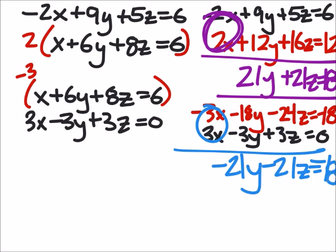Sorry, that's a little sloppy. But I need the blue one and the purple one right there. So if I write these together, I'm just going to write this purple one below. I've got 21y plus 21z equals 18.